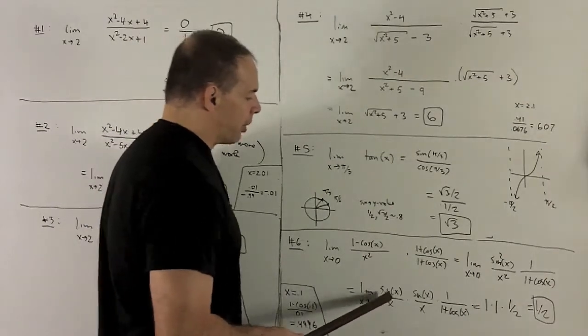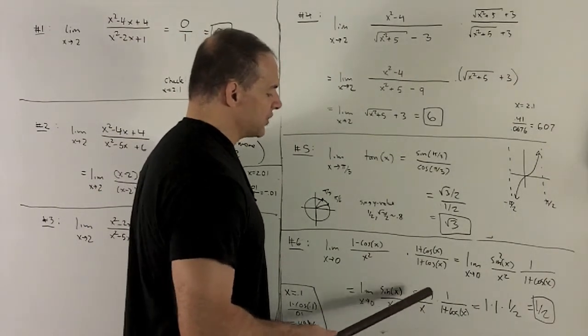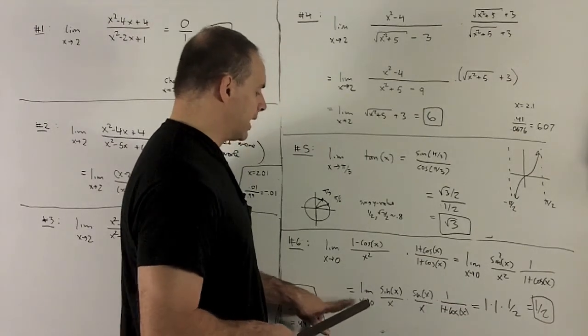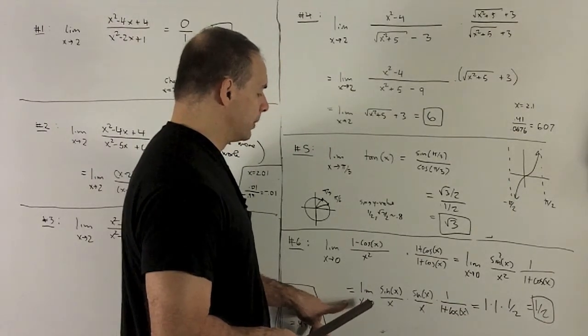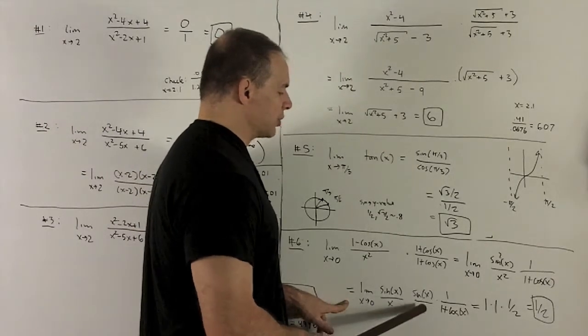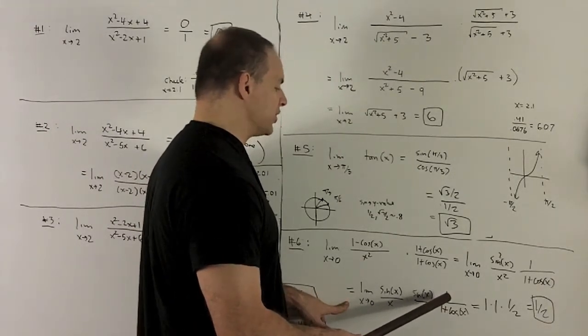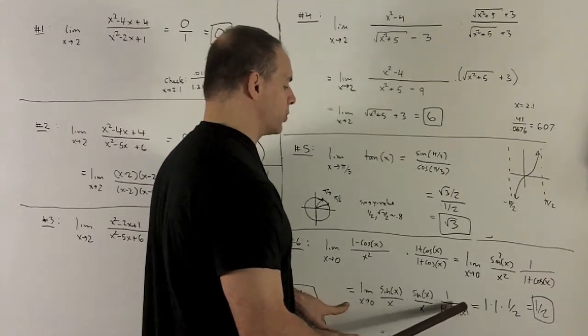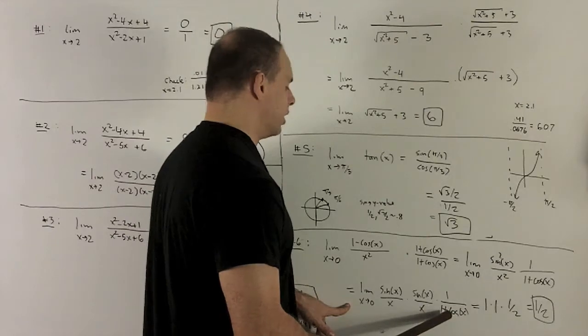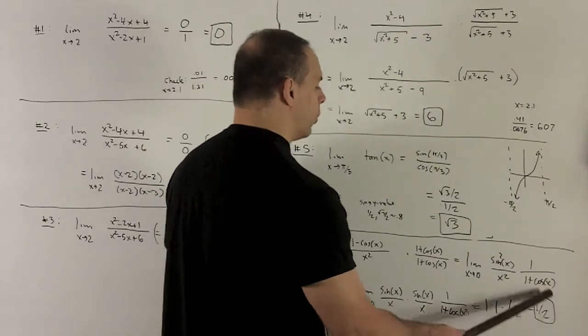Okay, I break everything apart. So I have sine x over x, sine x over x, 1 over 1 plus cosine x, and I'll put my 0 in to see what happens. So I know the first term is going to go to a 1. Second term is going to go to a 1. Then the third term, well, we put our 0 in, I get 1 over 1 plus cosine 0, or 1 over 1 plus 1, which is just a half. So my limit here is going to be one half.